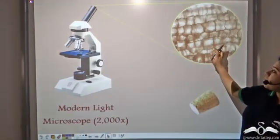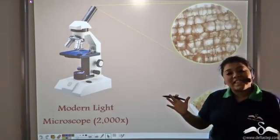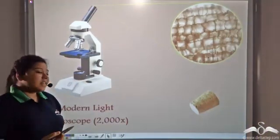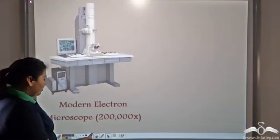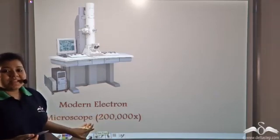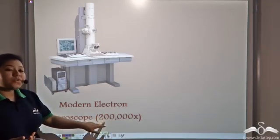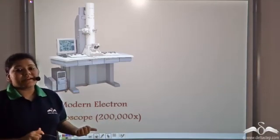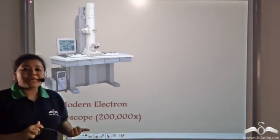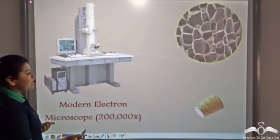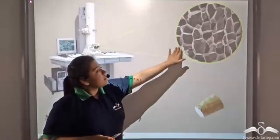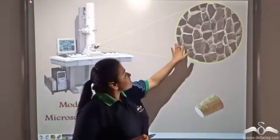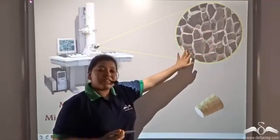The structures are more distinct and more enlarged. Now, if you want an even better magnification, then you can use a modern electron microscope that has a magnification power of 200,000x, which is hundred times more than the previous microscope. The same cork cells are observed like this. It is visualized better, it is more distinct, and you can see the three-dimensional structures of the cells.